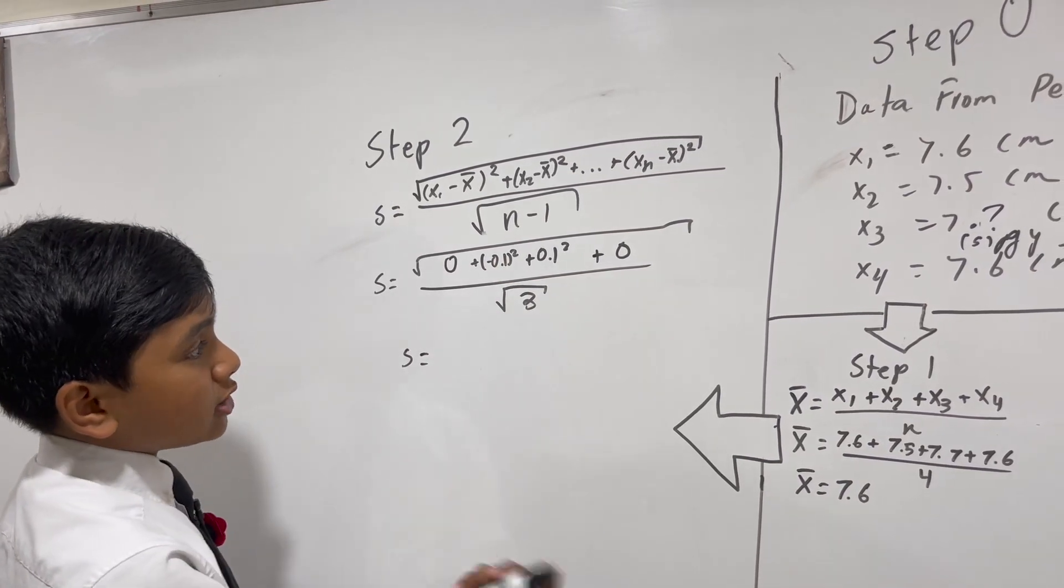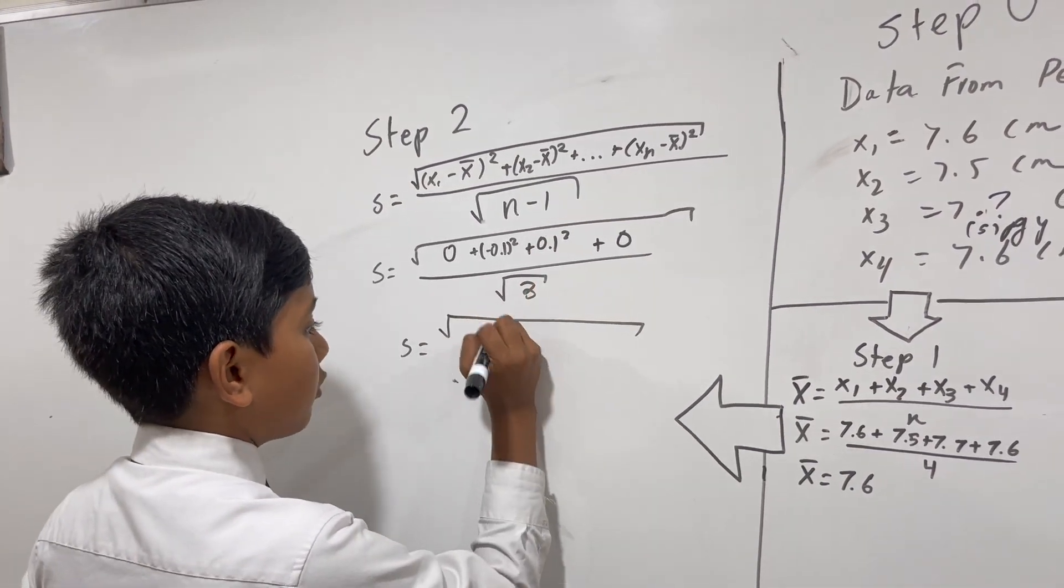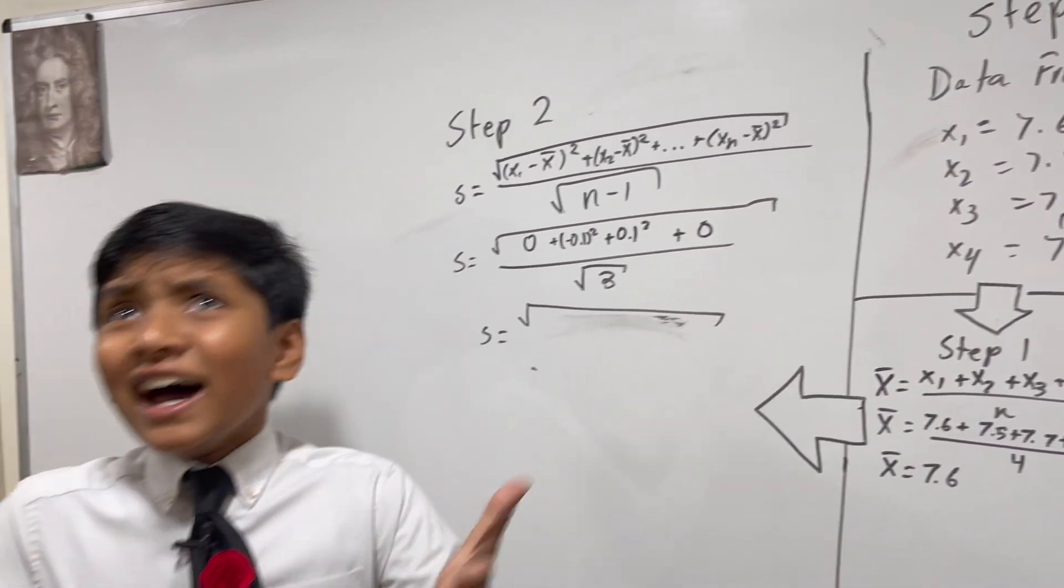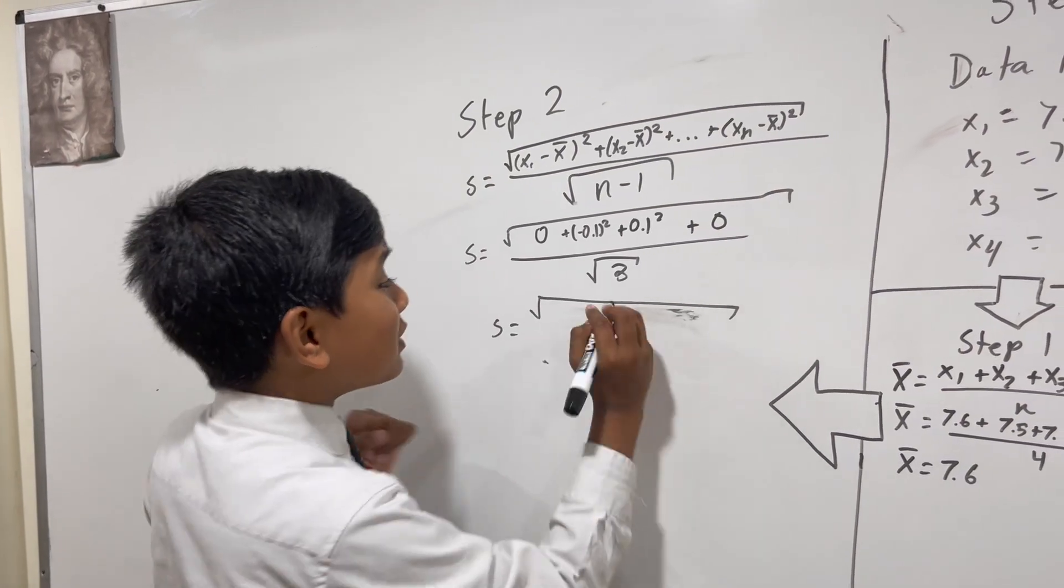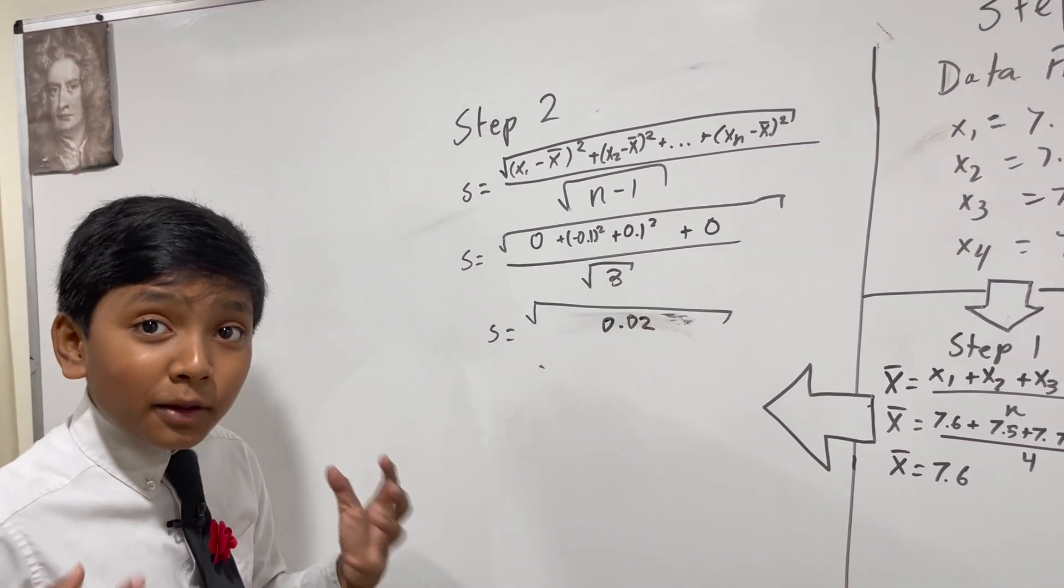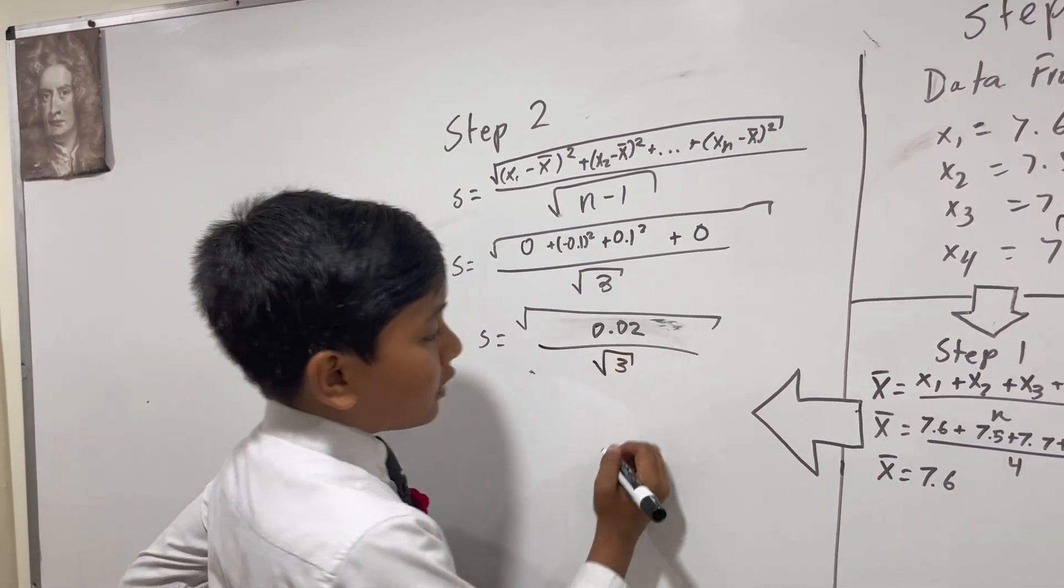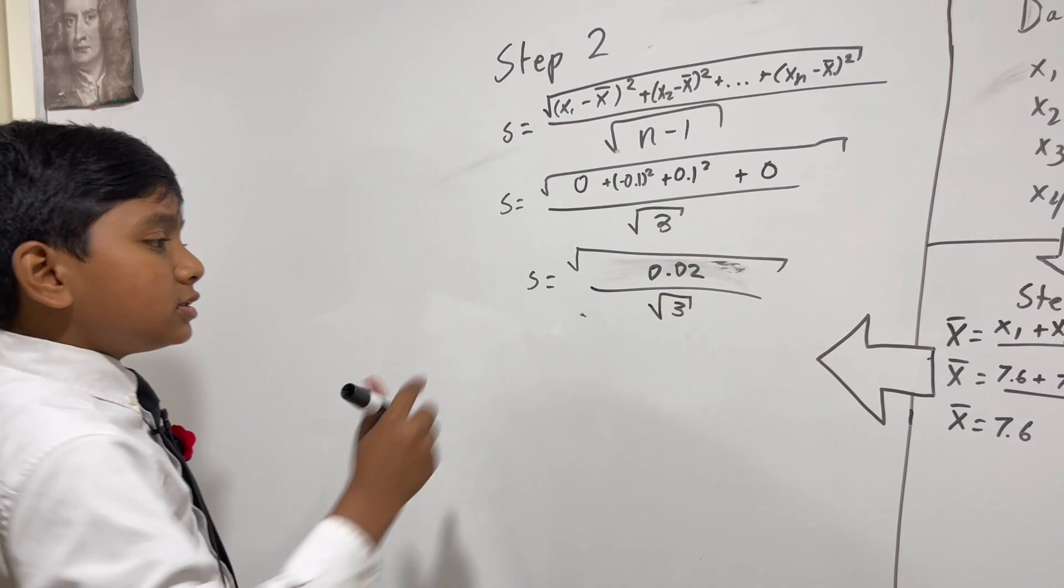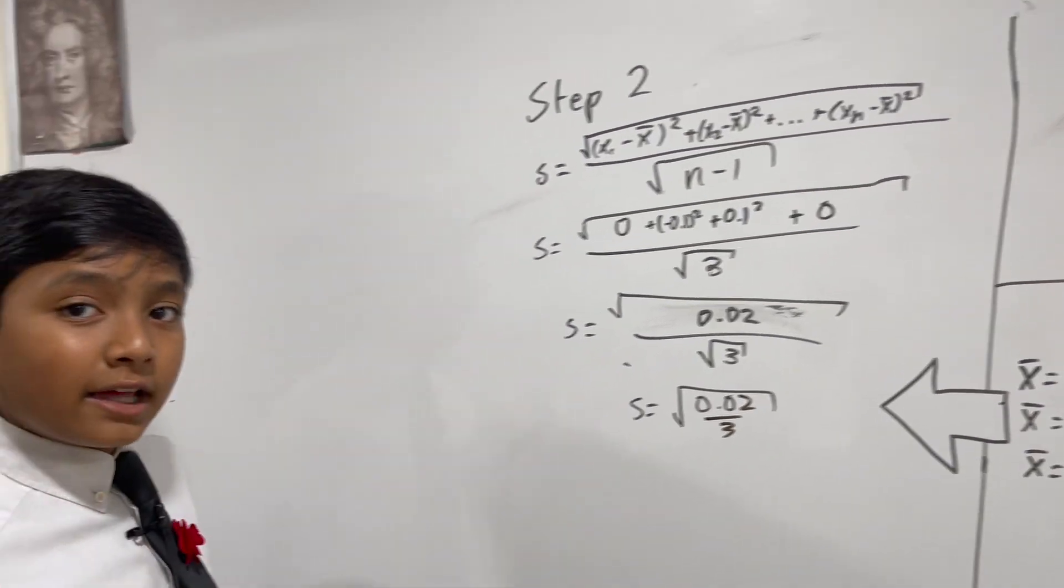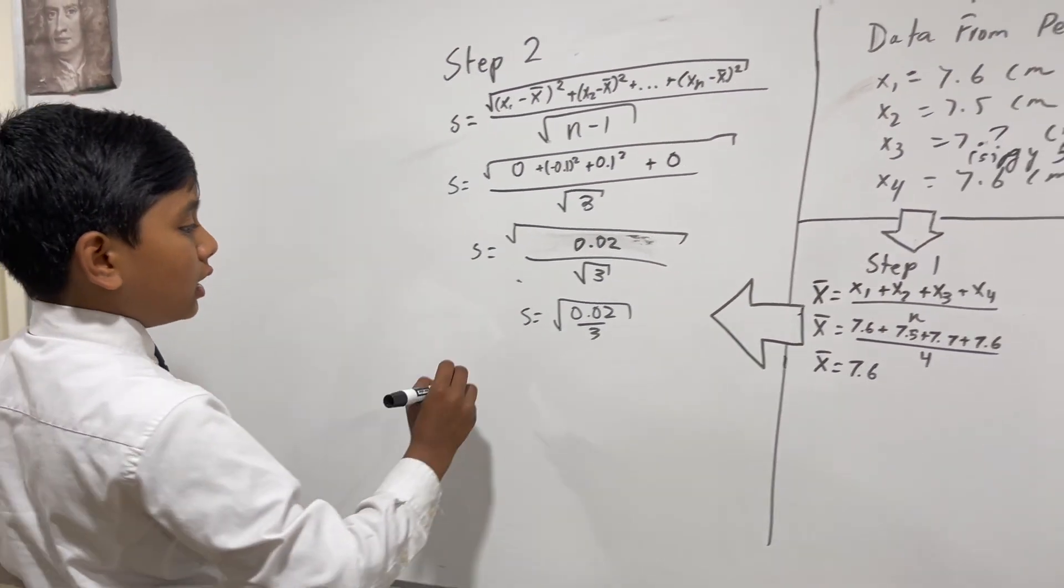All right, so now that gets us to negative 0.1 squared is 0.01, this is also 0.01. 0.01 plus 0.01 is 0.02. The square root of 3. All right, so we've obtained our final answer for the standard deviation, s equals 0.02 over root 3.